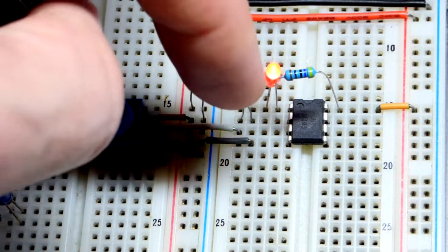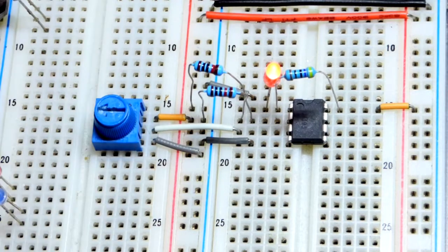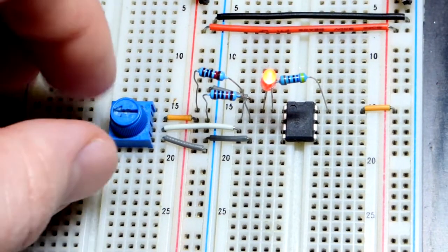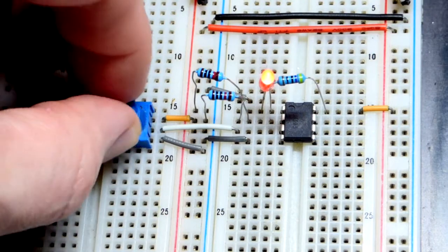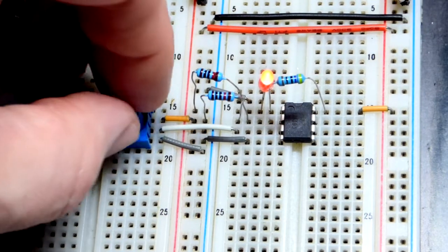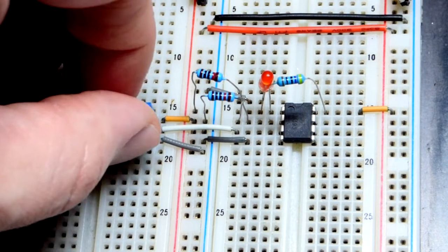And then we have our trim pot, which it is comparing. So right now, we must be up a little bit, even though we're halfway. If I go up more, the output stays high. Now the output goes low.